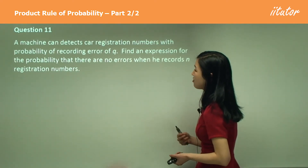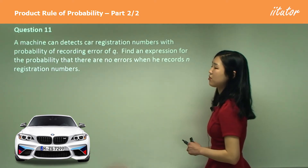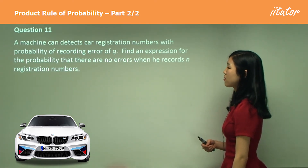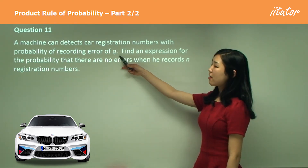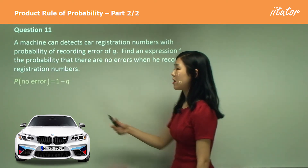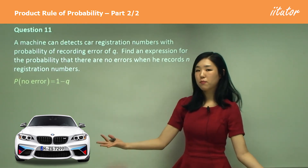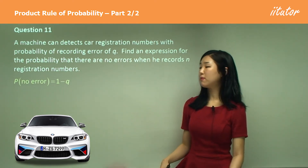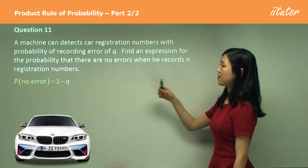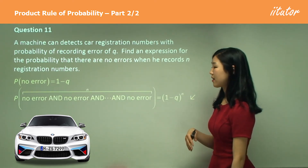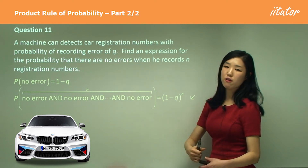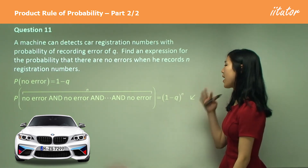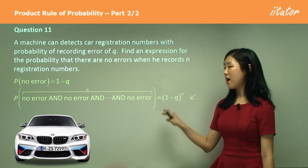A machine can detect car registration numbers with a probability of recording error of Q. We don't know what Q is — that's a probability. Find an expression for the probability that there are no errors when recording n registration numbers. The probability of not getting an error is one minus Q, since one is the total probability. For n numbers it's no error and no error and no error n times, so because it's 'and' we multiply: (1 − Q) × (1 − Q) × … n times, giving (1 − Q) to the power of n.